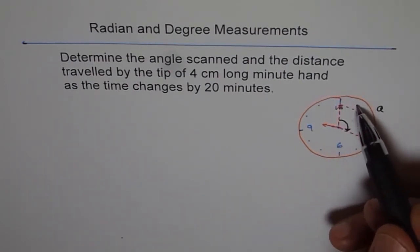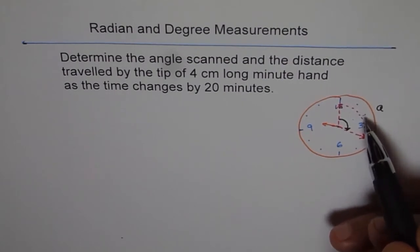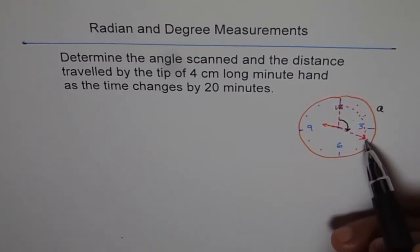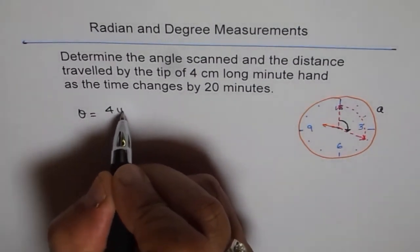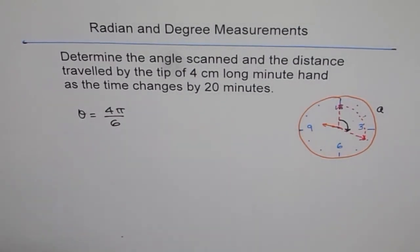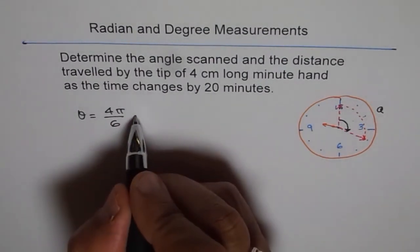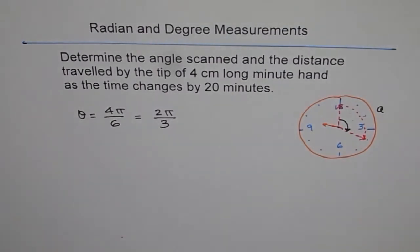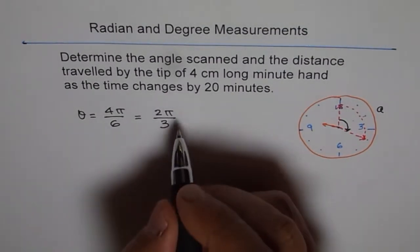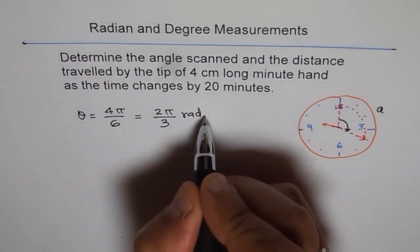So, this is 1 pi by 6, 2 pi by 6, 3 pi by 6, and 4 pi by 6. So, we say, well, theta equals to 4 pi by 6. So, that is in radians. This could be simplified as 2 pi by 3. See how easily we count it. So, that answer is in radians. Exact answer.